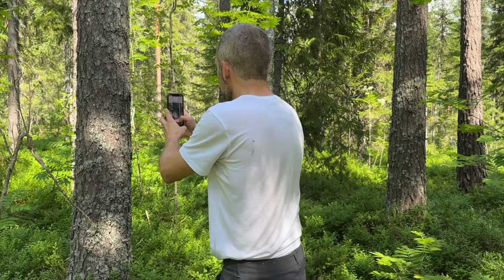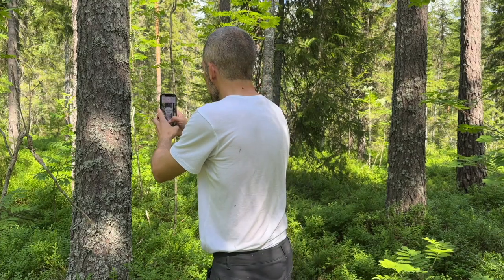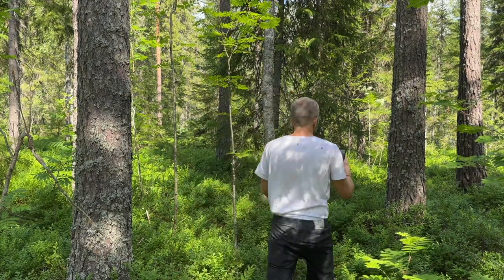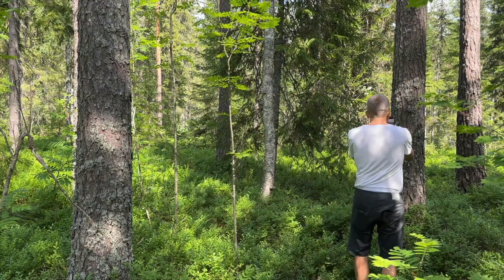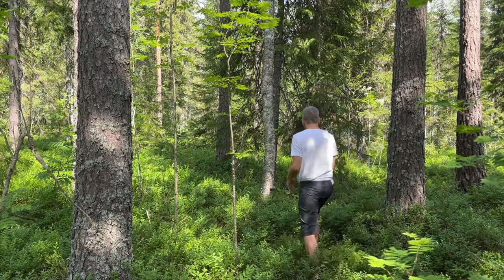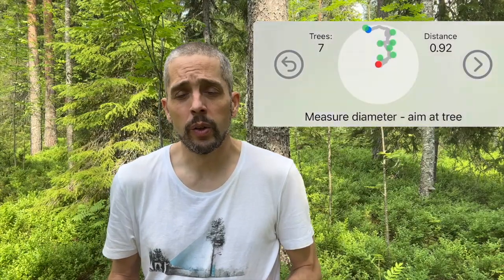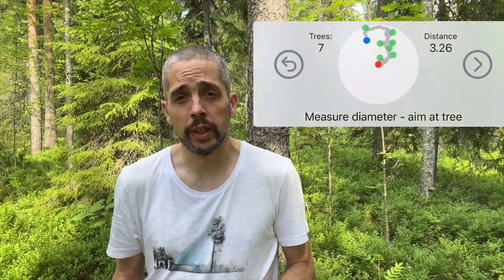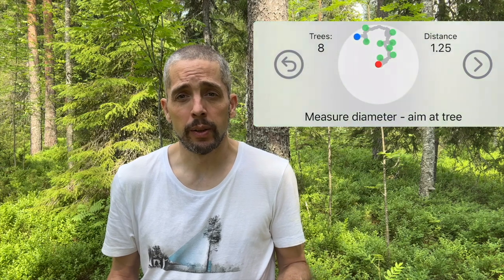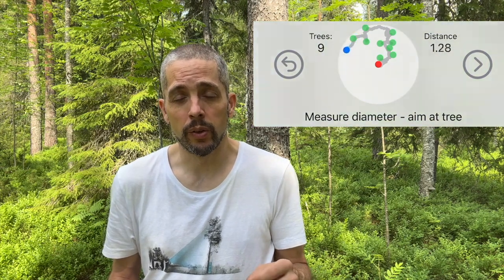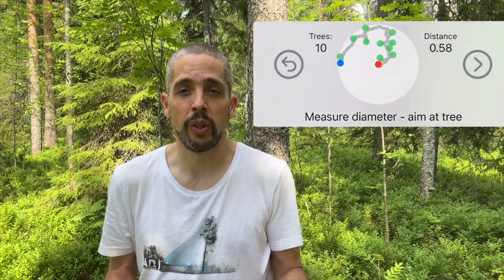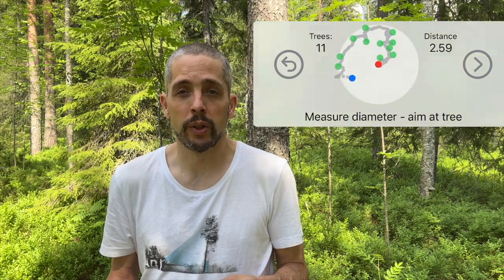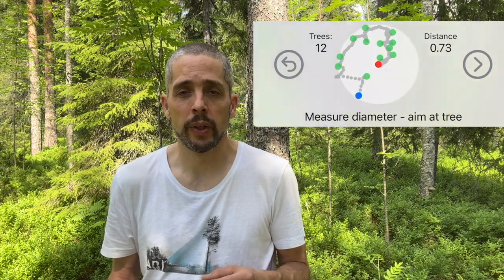Then walk around in the plot. If you are in a circular plot, try to measure all the trees in just one turn. You could see a minimap at the top of the screen. In that map you could see your own position, the position of the trees, the edges of the circular plot, and also the middle of the plot.